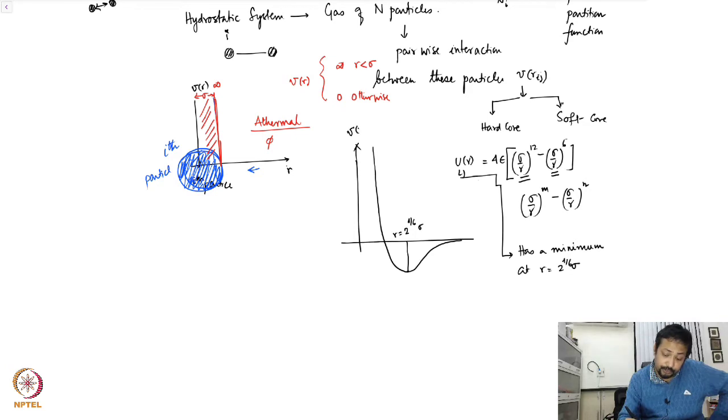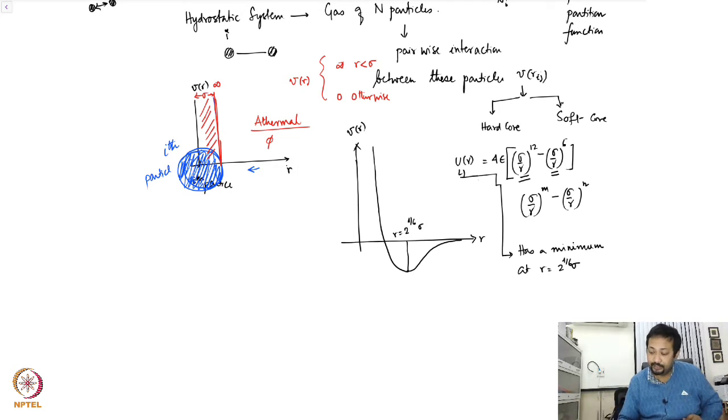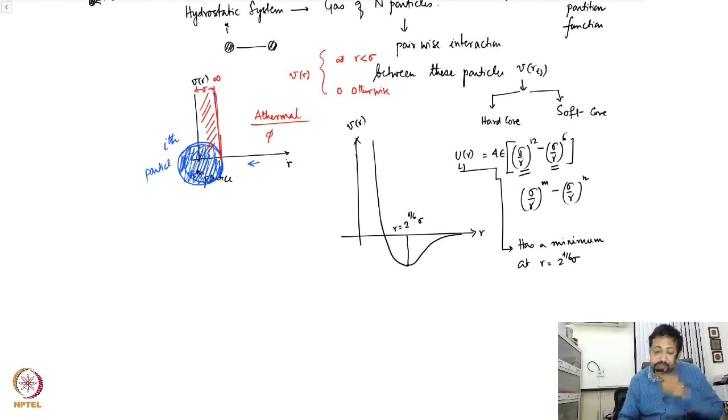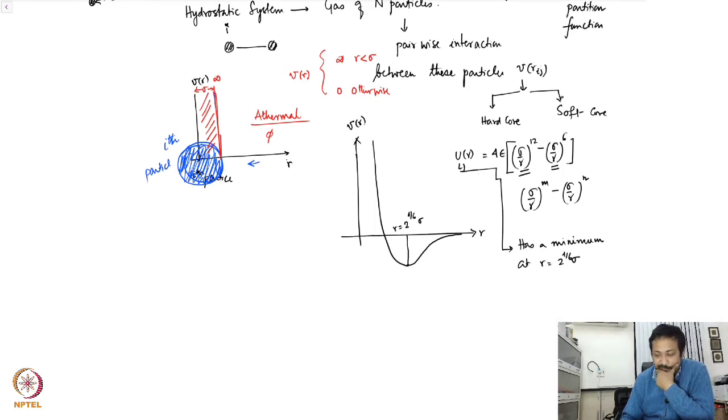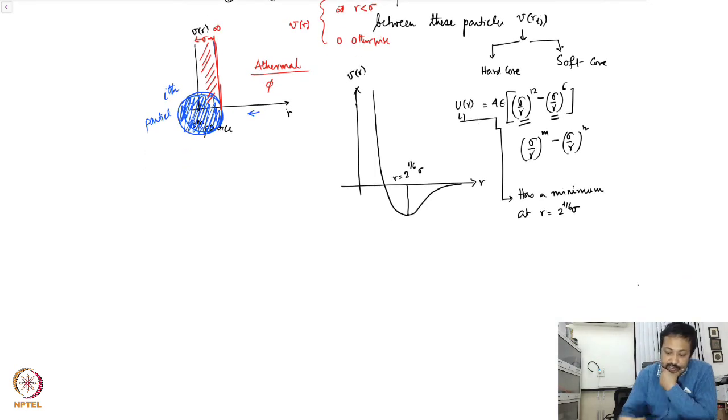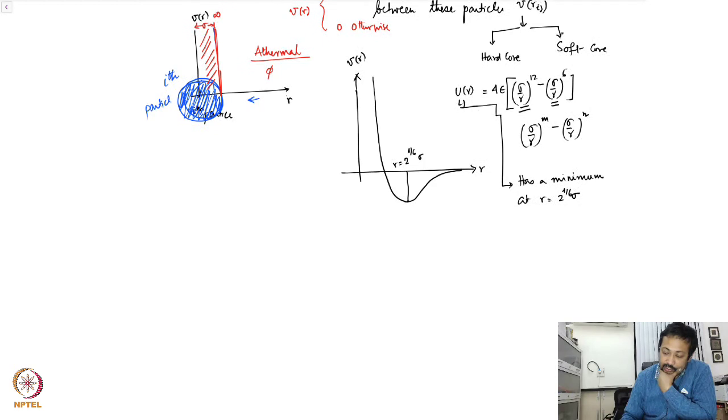Here of course your temperature will play a role. You will have a phase transition and all the properties will depend on the temperature of the system unlike your hard sphere temperature. So the question now is how do you handle such a thing. So let's start and our starting point again is the n particle Hamiltonian.